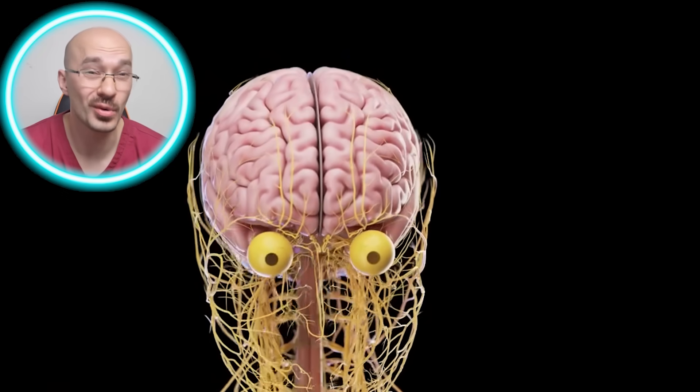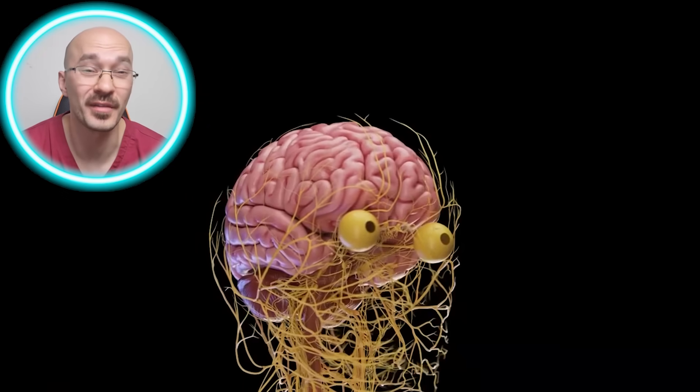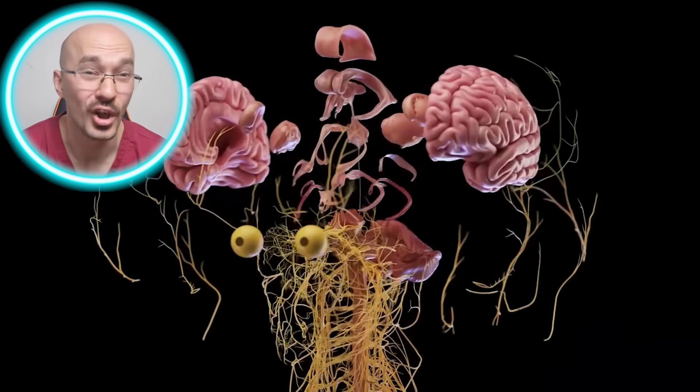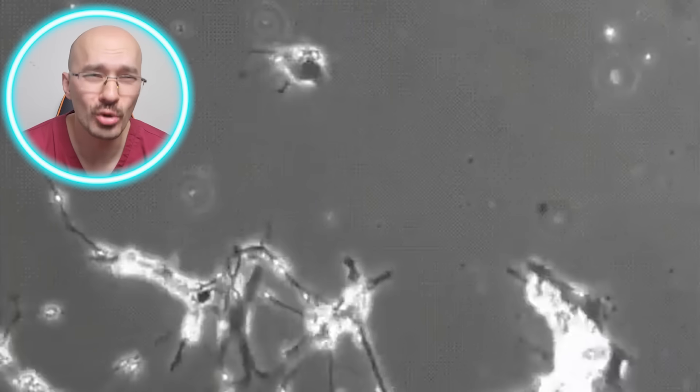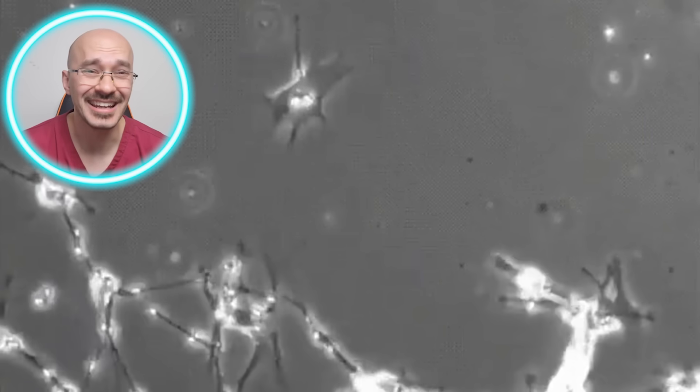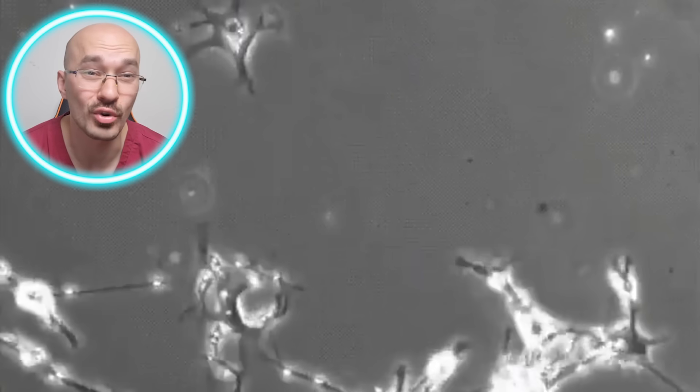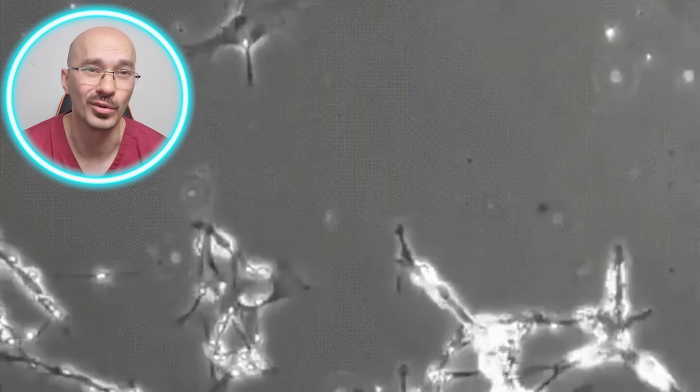How does T. pallidum then move on to affect your nervous system? The central nervous system is also damaged by this vascular inflammation. Nerve cells have a very low tolerance to being starved of oxygen, and even a small reduction in oxygen can lead to your nerves becoming damaged or even dying altogether.